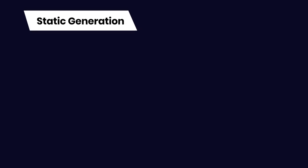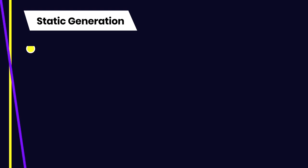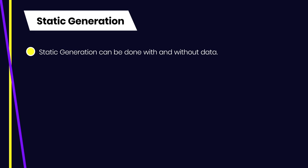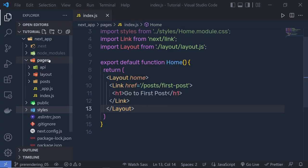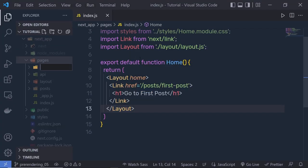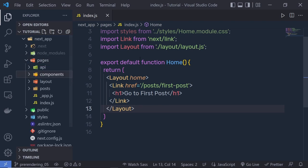Static Generation can be done with or without data. Pages that don't need external data are automatically statically generated at build time. For pages that require external data — accessing the file system, fetching an API, or querying a database — Next.js supports static generation with data. When you export a page component, you can also export an async function called `getStaticProps`. Let's create a new file inside `pages/components/home.js` to demonstrate this.